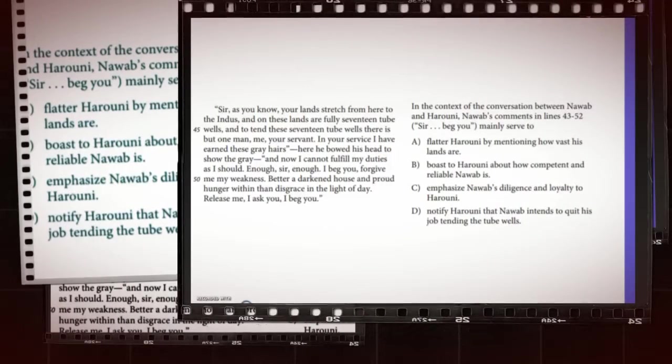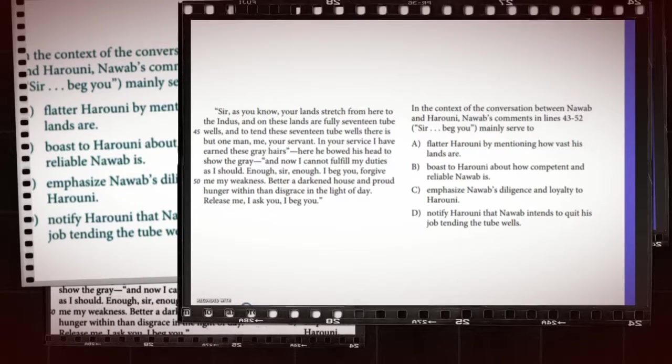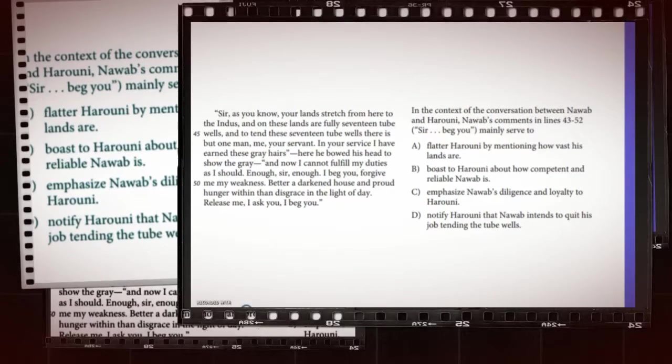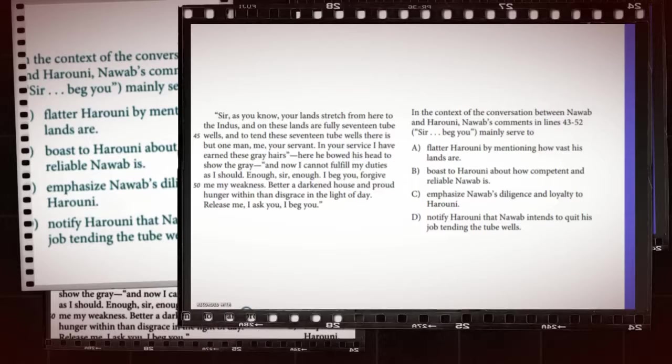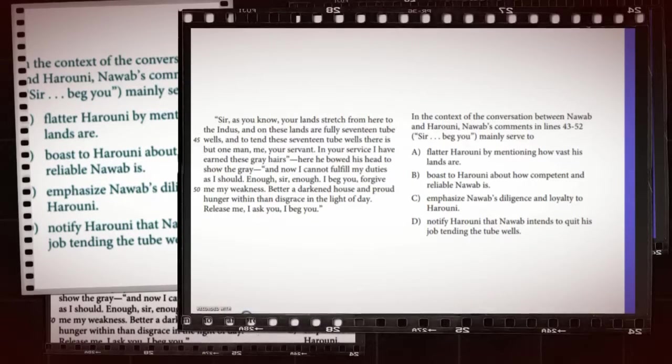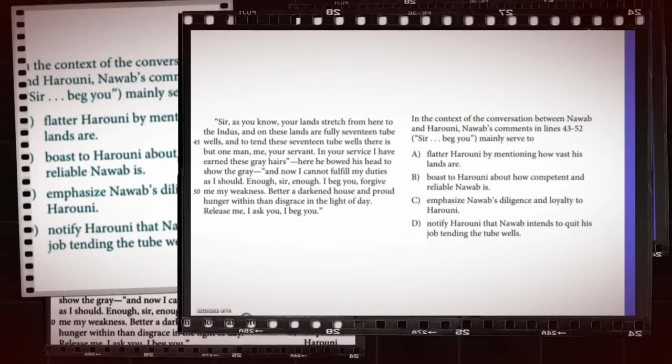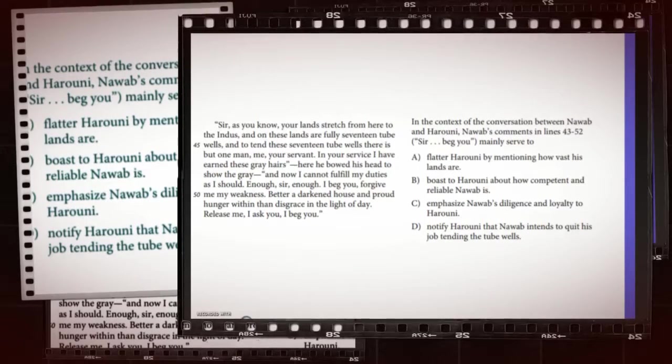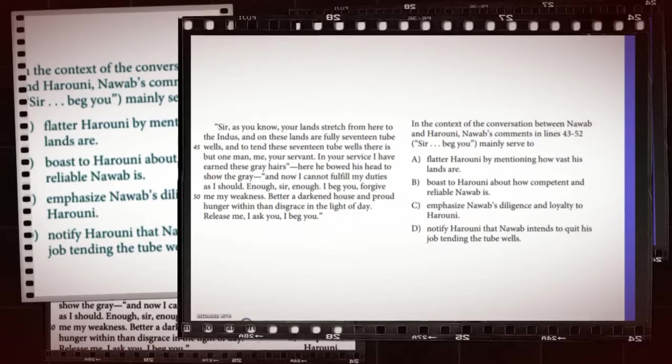As we look at the final question from our SAT reading passage, question 5, we see that this is another example of an information and ideas question, as it asks for specific details from lines 43 through 52. This is an example of a reading closely question, or in terms we might understand from class, a reading comprehension question.